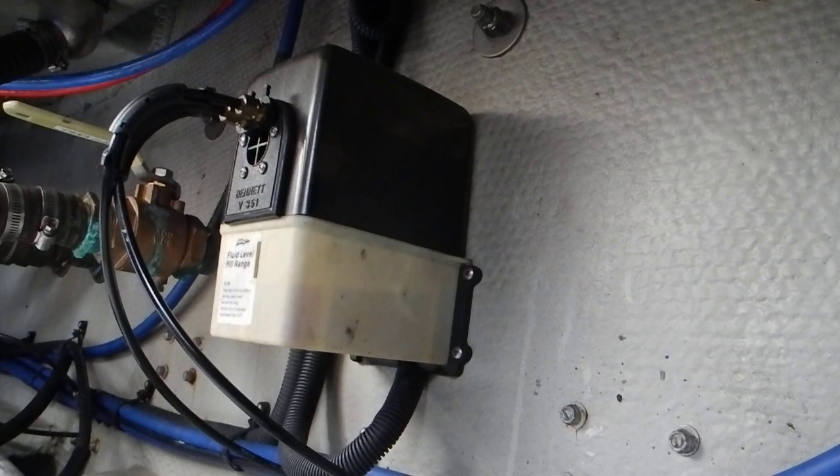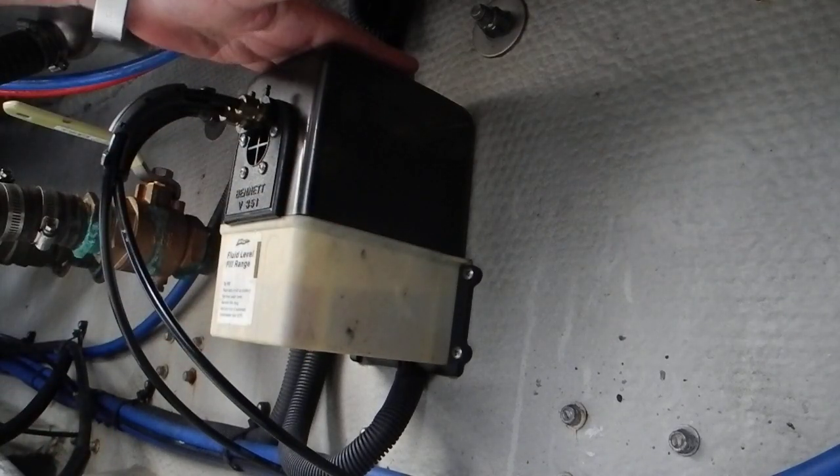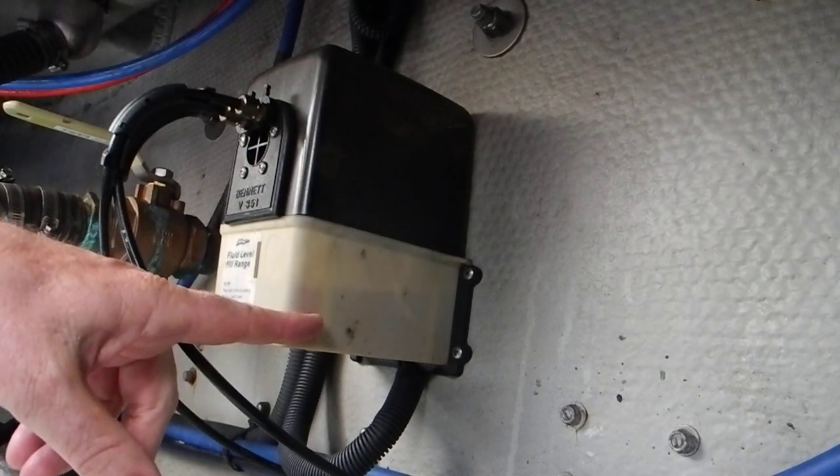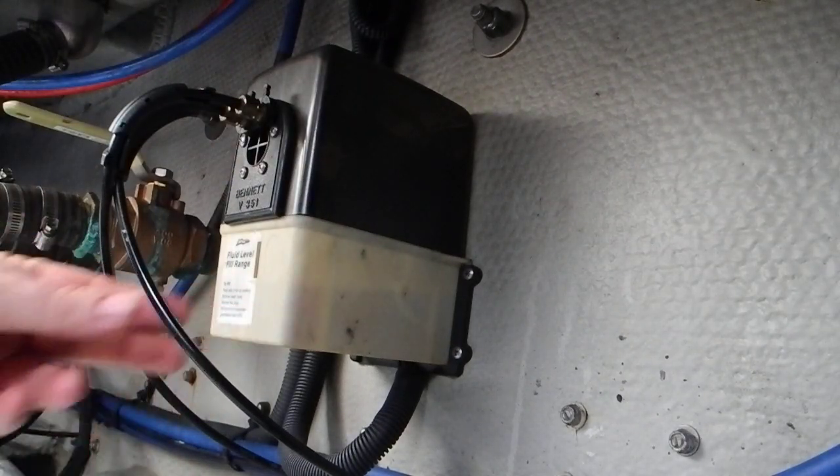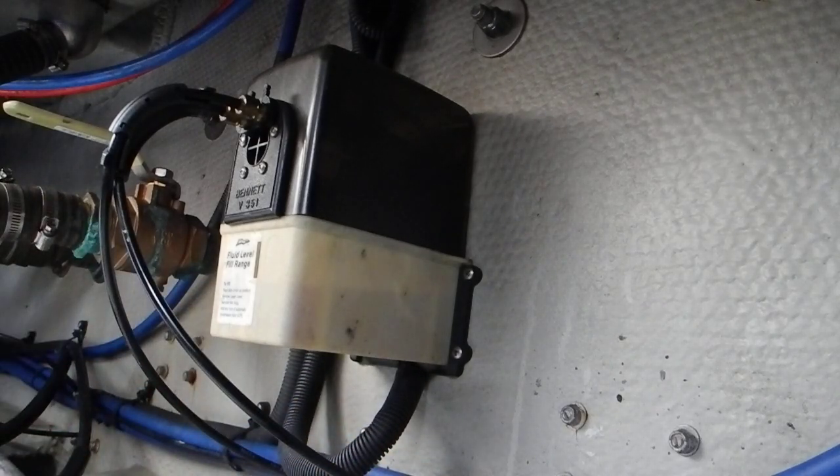Because they're hydraulic, we actually have a hydraulic reservoir right here and then we have the electric pump motor up here. So the electric pump motor will use fluid out of the hydraulic reservoir through these hoses into the port and into the starboard trim tabs.